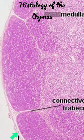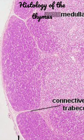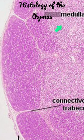In this picture you can see the capsule, and from the capsule you have the connective tissue septa or trabeculae, which incompletely subdivide the lobe into several lobules. Within the lobule you have an outer cortex and a medulla. The medulla of adjoining lobules are continuous with each other.